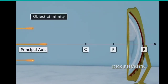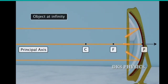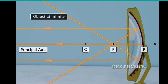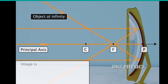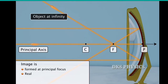Light rays from an object at infinity are considered to be parallel. Therefore, the incident rays converge at the principal focus after reflection. The image in this case is formed at the principal focus and is real, inverted, and highly diminished in size.